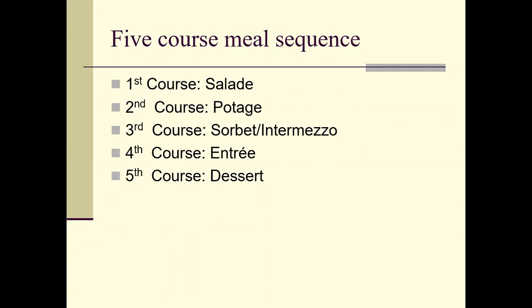A five-course meal sequence is usually the traditional way we do our bistros. The first course is a salad, the second course is a potage — soup, the third course is a sorbet or intermezzo — a palate cleanser, the fourth course is an entrée, and the fifth course is dessert. You also have to take into consideration whether your dishes go hot to cold or cold to hot. The salad is cold, the potage is hot, the sorbet is cold, and the entrée is hot.